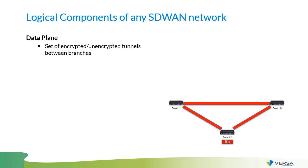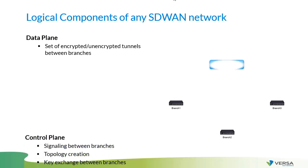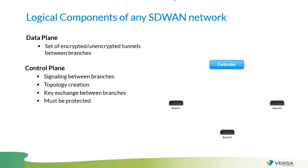But how does branch one know it needs to create a data plane tunnel to branch two? For this, we have a component called the control plane. The control plane is usually created using a central component called the controller. All the branches, or all the devices in your SD-WAN network, establish a protected channel to the controller, and inside that channel each branch informs the controller who it is and what ports it has.